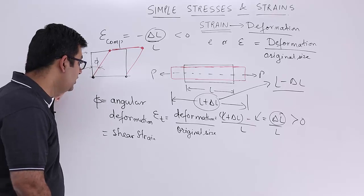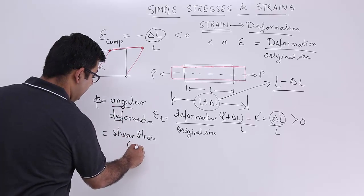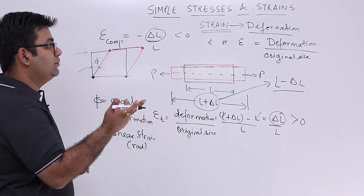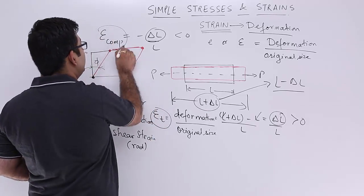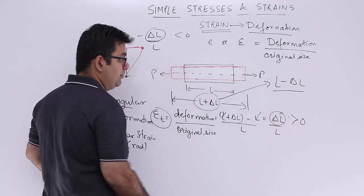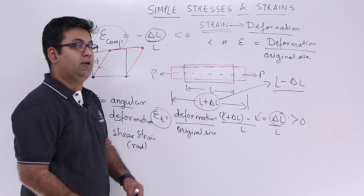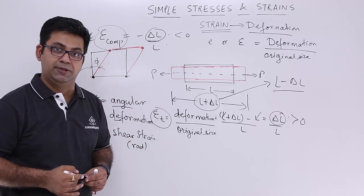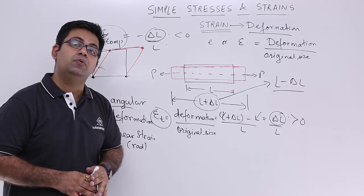Shear strain is produced in the case of shearing stress or shearing loads, and since it is an angular deformation, it is measured in radians. The units of shear strain are radians. For tensile strain and compressive strain, there are no units because it is length divided by length — the units cancel out. But shear strain does have units.